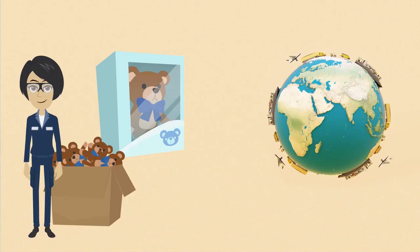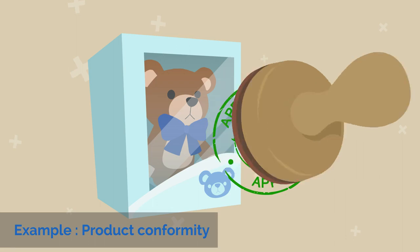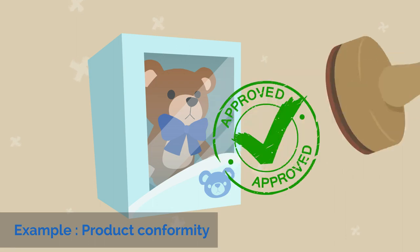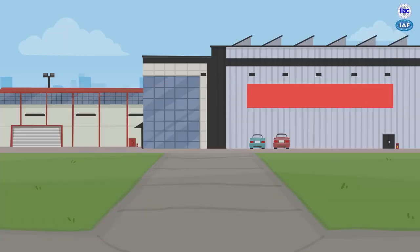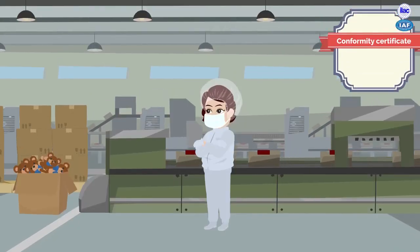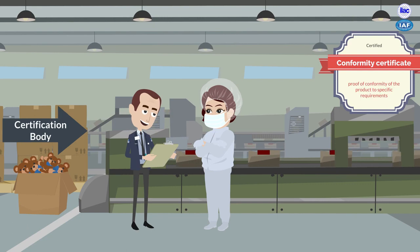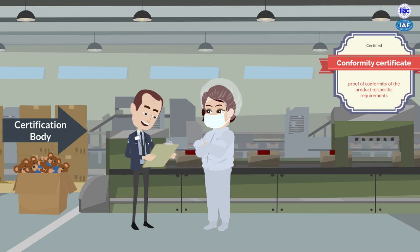Take the example of product conformity. A toy manufacturer wants to produce and export a product that is enjoyed all over the world without having to set up multiple factories in each country. Proving the conformity of its toys to the target market requirements may include a number of conformity assessment activities. For instance, product certification may be required to ensure the product meets specified requirements, often including regulatory standards.